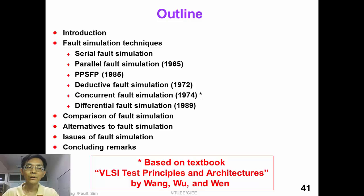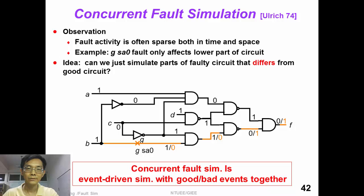The idea of concurrent fault simulation has been proposed as early as 1974. The idea is actually very simple. Our observation of fault simulation is that fault activity is often sparse both in time and space.